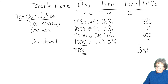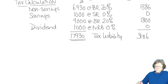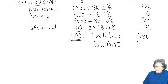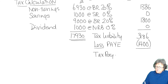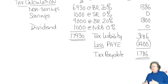So £3,186 is the tax liability — that's how much tax she is liable for. However, less income tax paid at source: £1,400 has been paid at source. Therefore, the tax payable is reduced down to £1,786. That's important — you'll get an extra mark for putting the PAYE in. Always go back to your question every time to check.